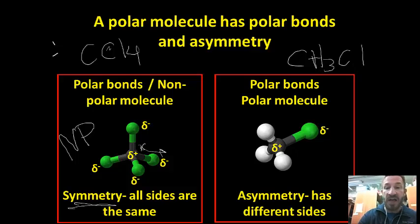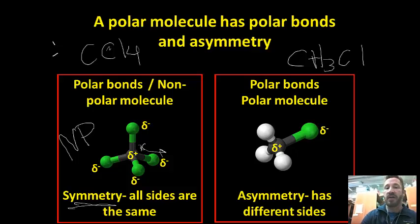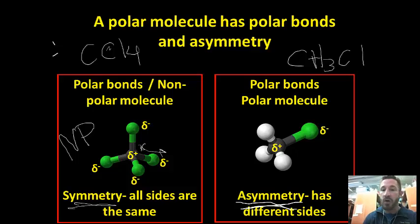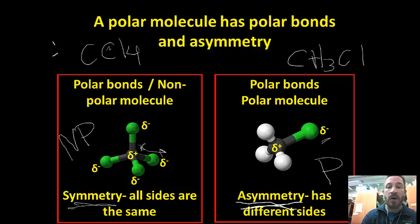A polar molecule example is CH3Cl. We have three hydrogens on one side and one chlorine on the other. The hydrogens do not cancel out the chlorine, so we say this is asymmetrical — there's a negative end and a positive end that do not cancel, making this a polar molecule.